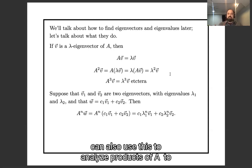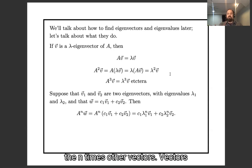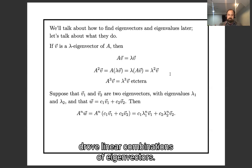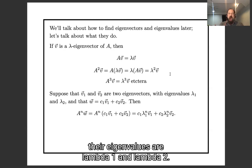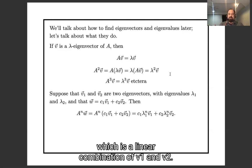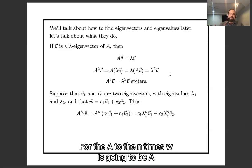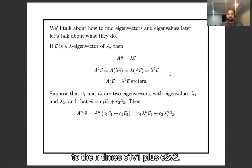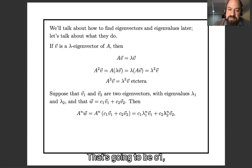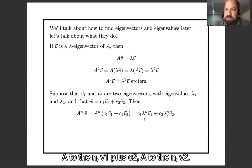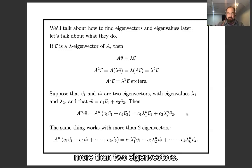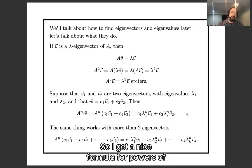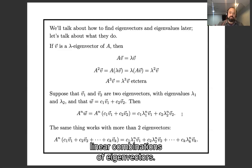We can also use this to analyze products of A^n times other vectors, vectors which are linear combinations of eigenvectors. Suppose I have two eigenvectors, v₁ and v₂, with eigenvalues λ₁ and λ₂. And I have some vector w which is a linear combination of v₁ and v₂. Then A^n times w is going to be c₁λ₁^n v₁ plus c₂λ₂^n v₂. And of course the same thing works if I have more than two eigenvectors. So I get a nice formula for powers of A times things which are linear combinations of eigenvectors.